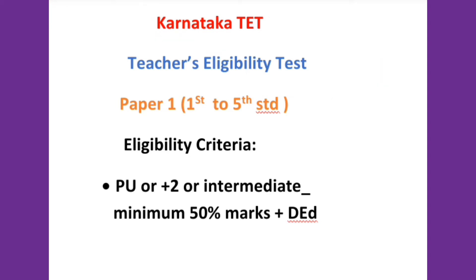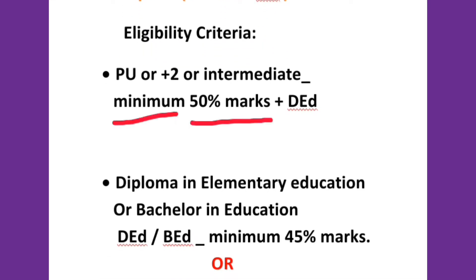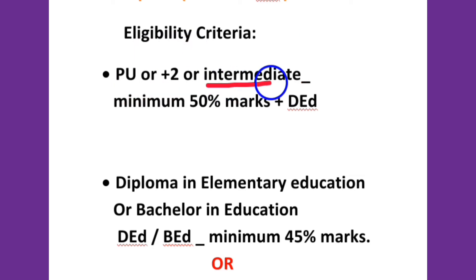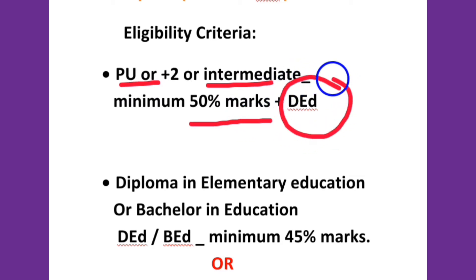Let us check out the eligibility criteria for Paper 1 TET. Paper 1 is for teachers who wish to teach classes from 1st standard to 5th standard. The candidate must possess PU, or Plus 2, or Intermediate — we call it PU, pre-university, or Plus 2 in CBSE. In various states they mention it as Plus 2 or Intermediate, equivalent to PU, with a minimum of 50% marks. If the candidate has completed D.Ed — Diploma in Education — then they can appear for TET.